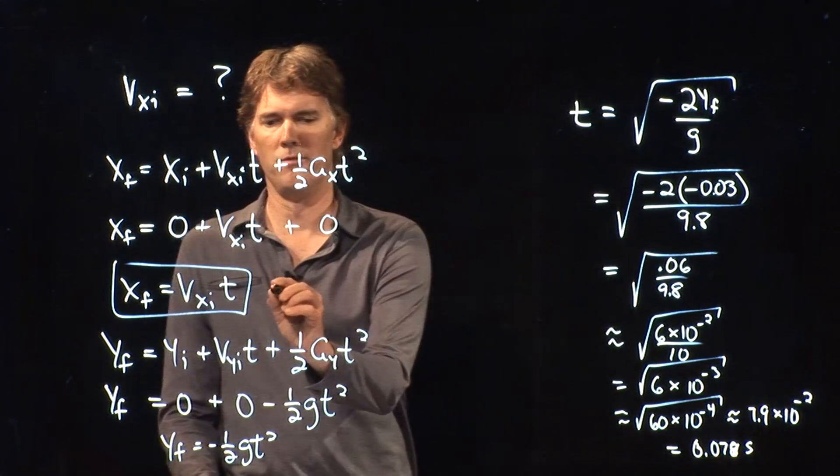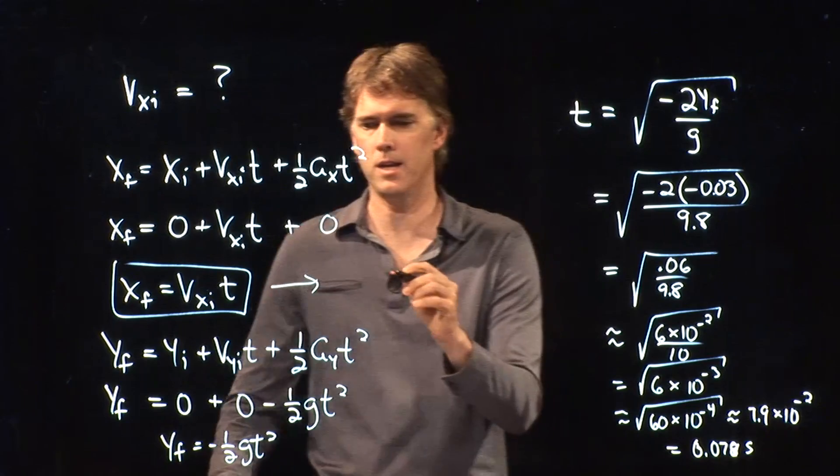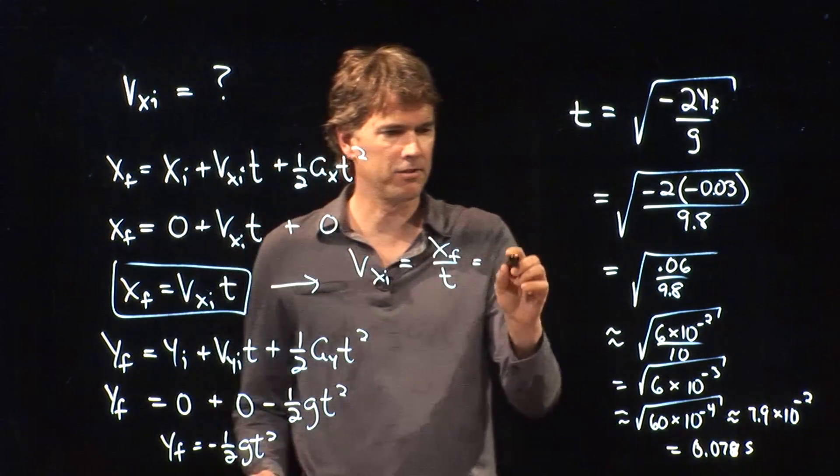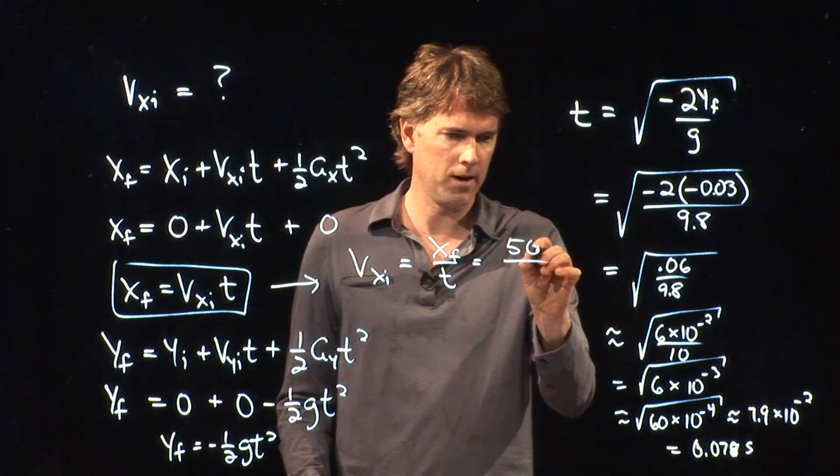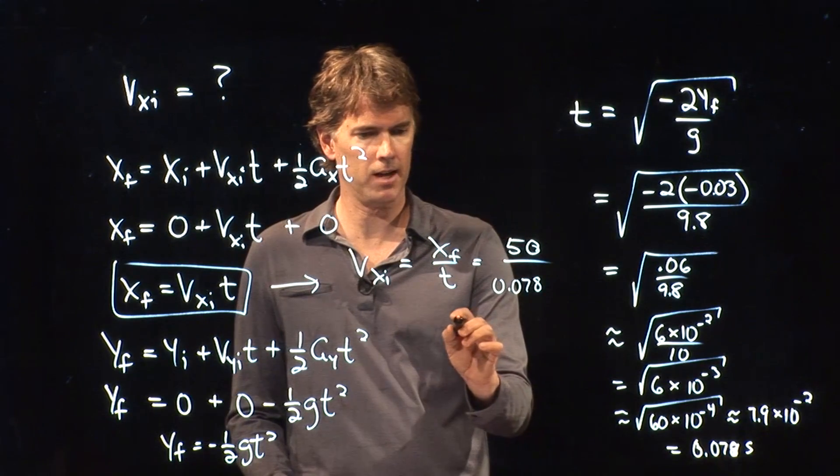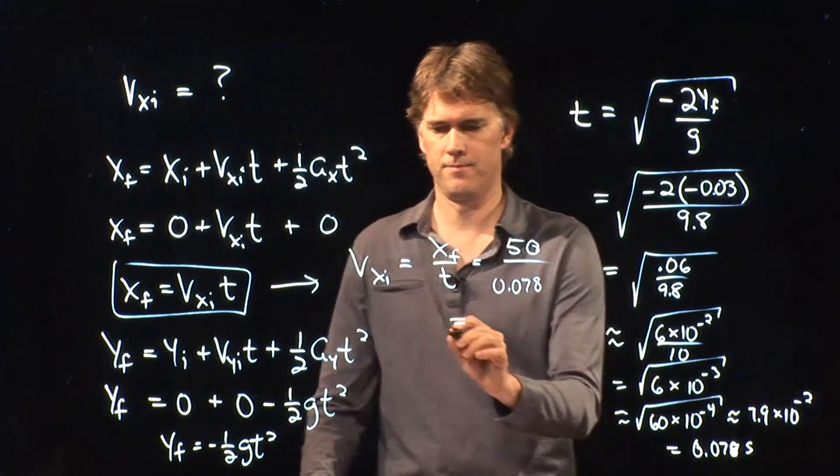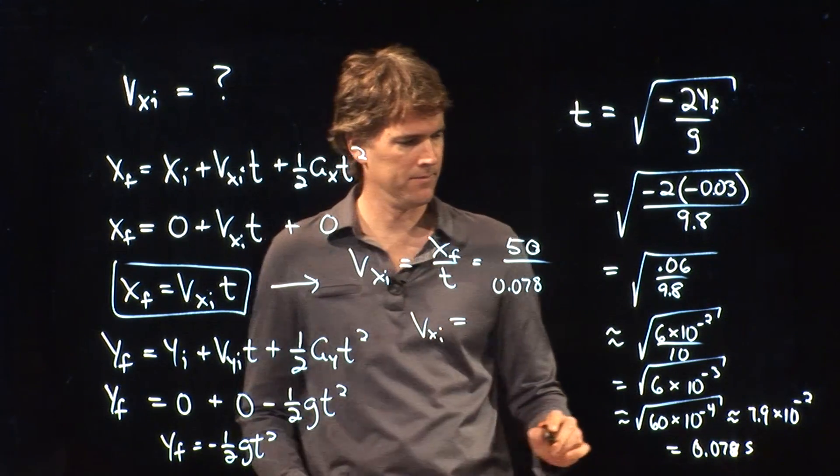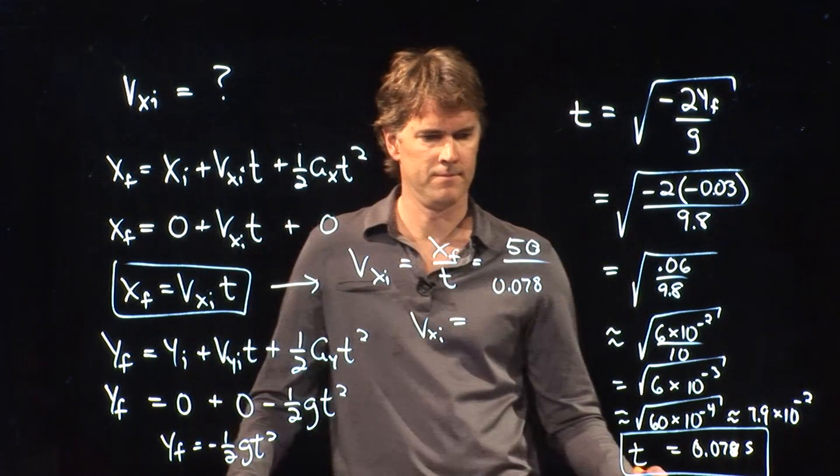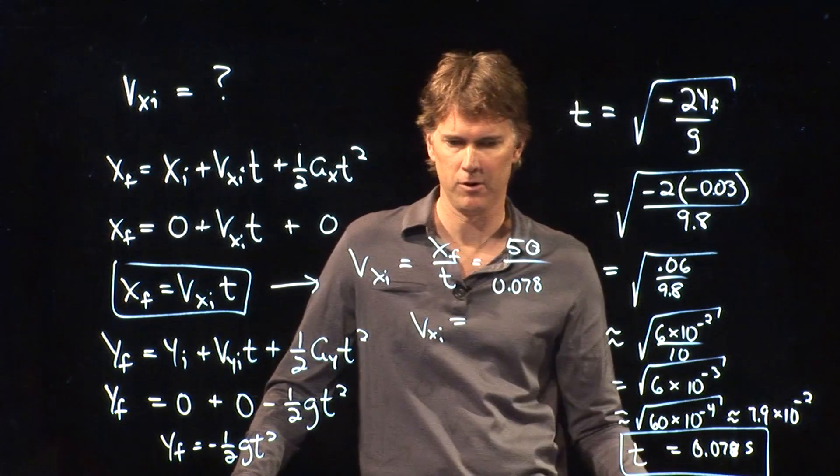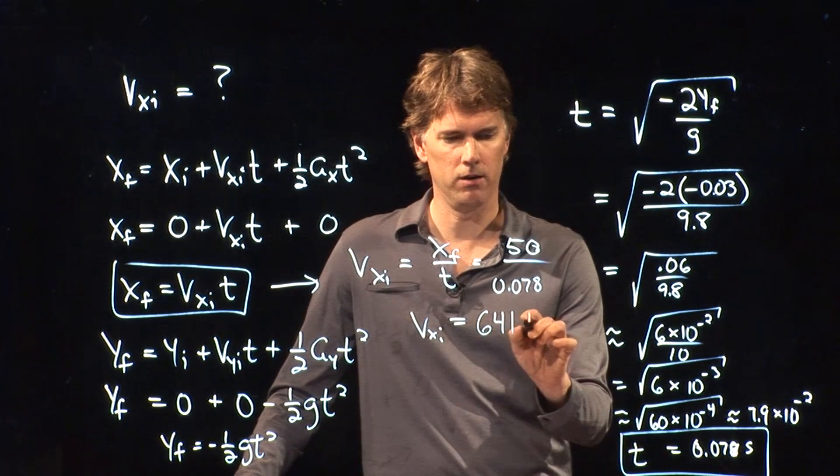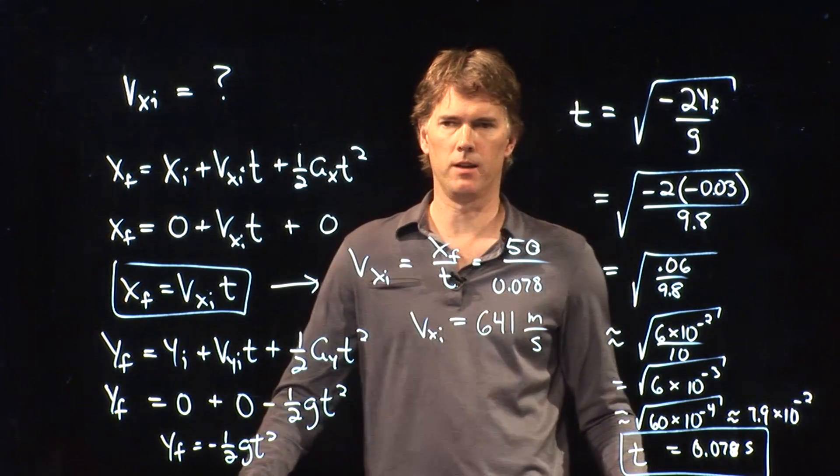Okay. So we've solved for t. And now we want to solve for v. What is the speed coming off? Vxi is equal to x sub f over t. X sub f we know is 50. And we are now dividing by 0.078. Tell me what you guys get for that. 50 over 0.078? What did you get? 641. 641 meters per second.